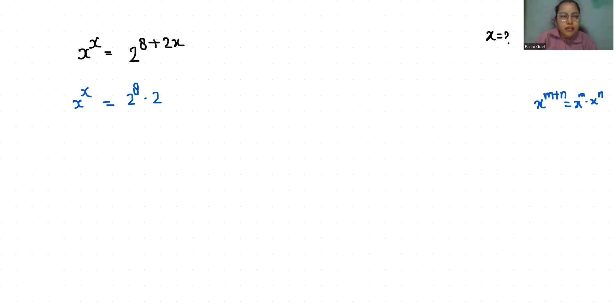Now x power x by 2 power 2x equals 2 power 8. According to exponent rule x power m, we can write it as x power m power n or x power n power m.